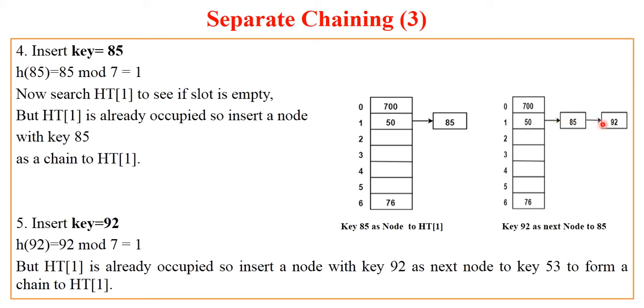As we have already 85 as one of the keys having remainder 1, these are synonyms. So to accommodate the next synonym 92 with these two, we will create a new node and insert at the end of the list having hash index 1. So this way we have inserted two keys as a chain.